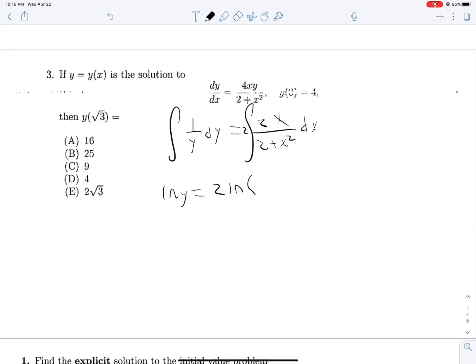So we'll end up with 2 ln 2 plus x squared plus c. Raising both sides, taking e to both sides, we will get y is equal to e to the 2 ln 2 plus x squared, and then this c can come outside like that. This will be simplified down to 2 plus x squared to the second power. And we can solve for this c, knowing that y at 0 is equal to 4. So 4 is equal to c times 4. So c is equal to 1. And we're finding y at root 3. That's going to be 5 squared, so 25.